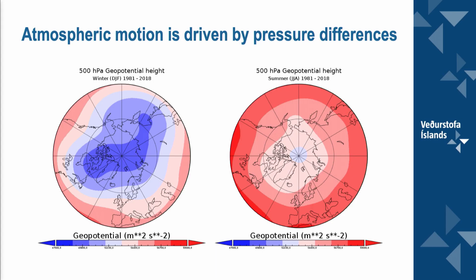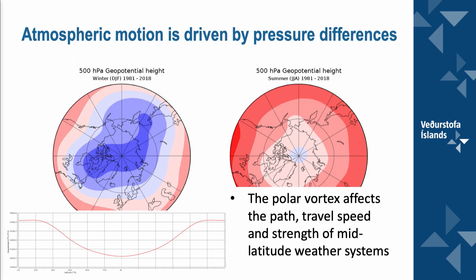How do you describe the atmospheric circulation? One way is to show the pressure fields high in the atmosphere — about five to six kilometers up. Blue means low pressure, red means high pressure. Normally you tend to have lower pressures over the Arctic and higher pressures outside. This leads to a pressure difference, and atmospheric motion tries to flow from high to low pressure. But because the globe is rotating, those pressure systems end up encircling the low pressure system — this is why we call it the polar vortex. And this polar vortex affects the path, travel speed, and strength of mid-latitude weather systems.